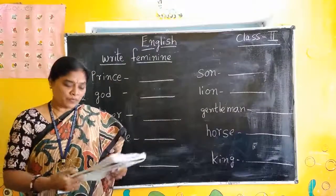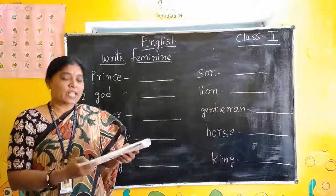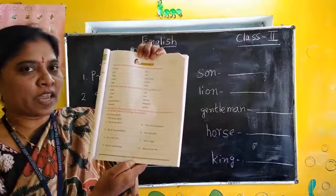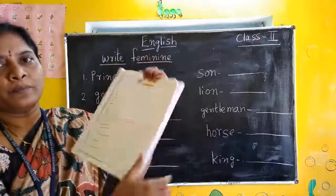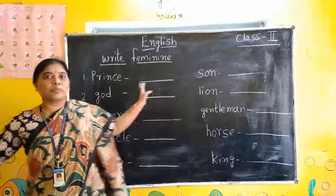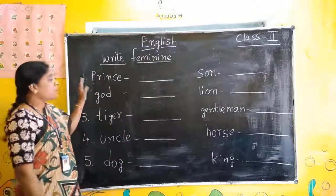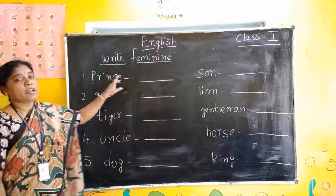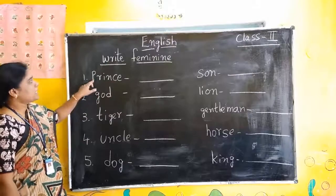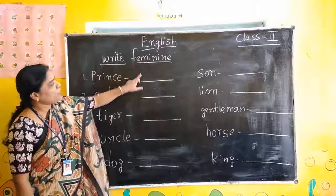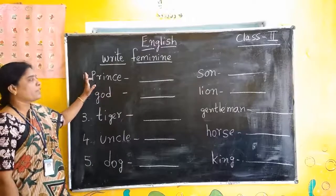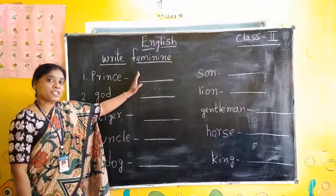Children, now we will do some exercises. Take page number 33. First one we will do. I have written on the board. Look at the board. Read with spelling and write neatly. Prince — here we have to write in feminine form. He words are given, we write she words.